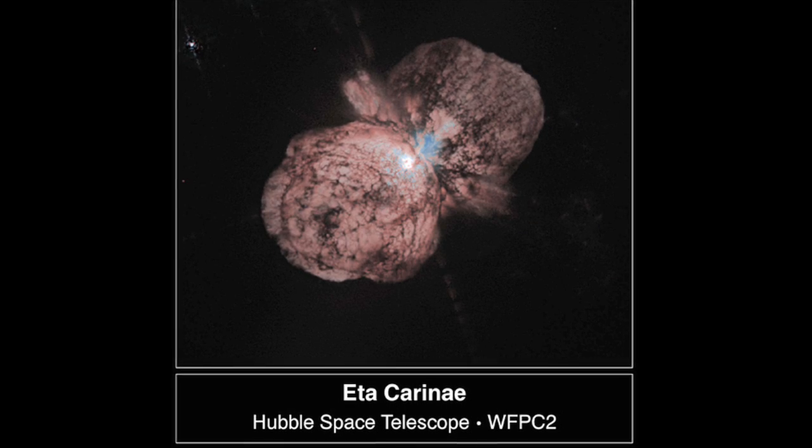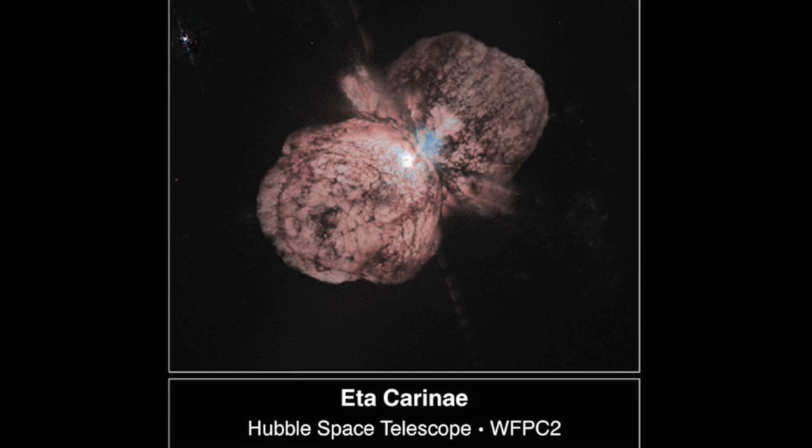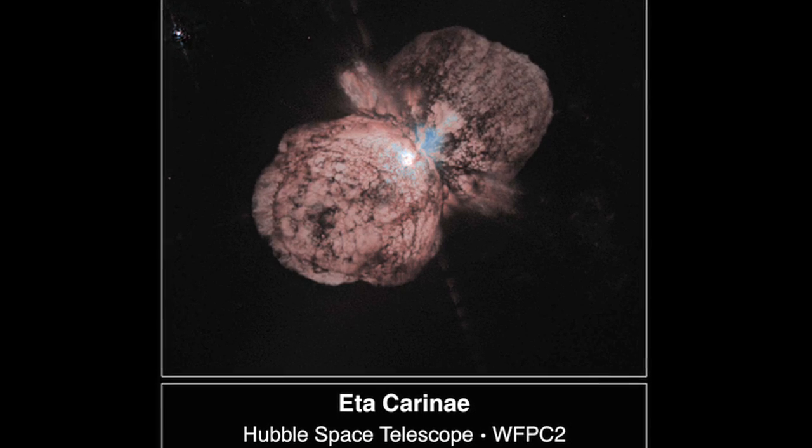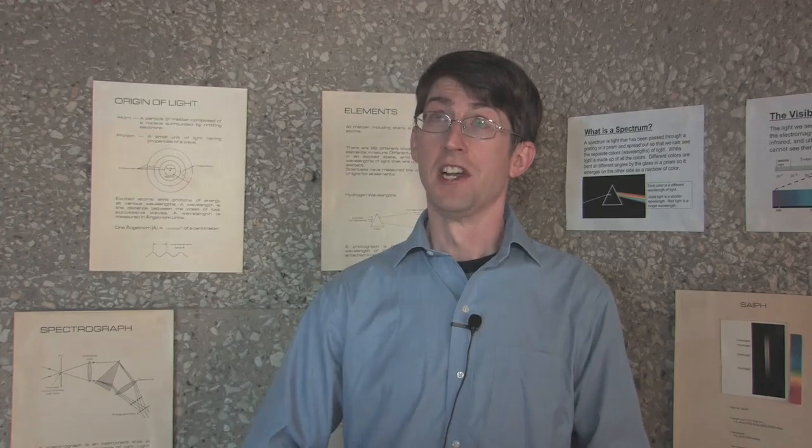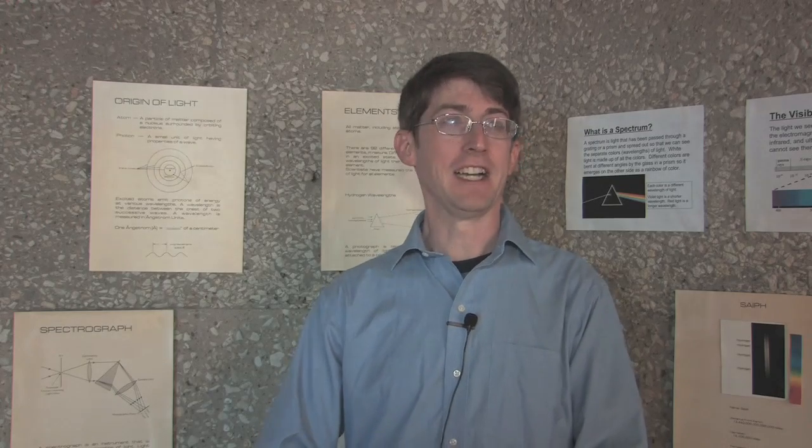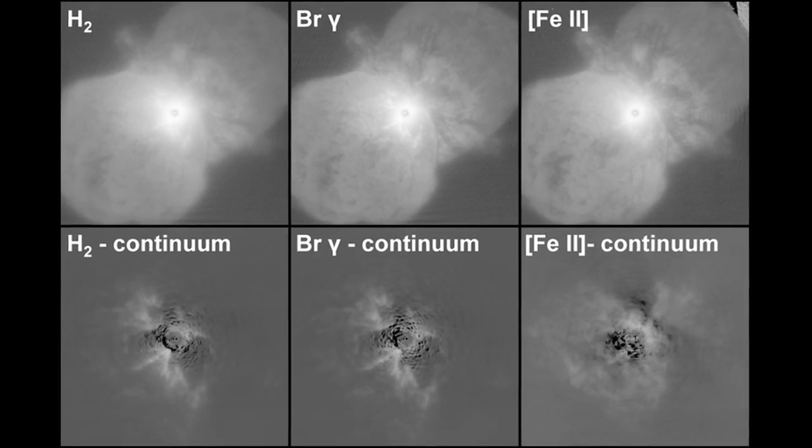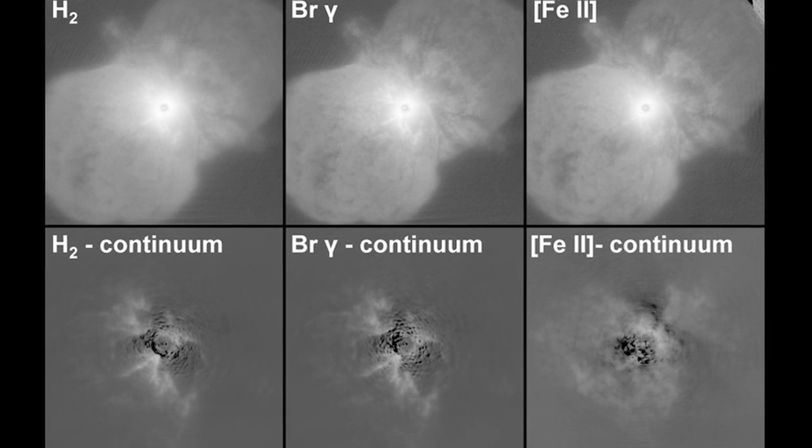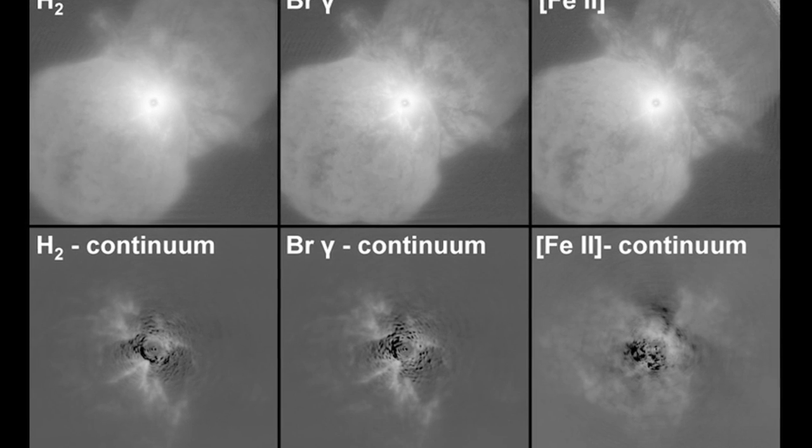When I was a postdoc at the University of Minnesota, I was on a project with the Hubble Space Telescope to study a star called Eta Carinae, which is one of the largest stars in our galaxy. Right now it's probably around 100 times the mass of our own sun, which makes it very large. It was much bigger at one point actually.